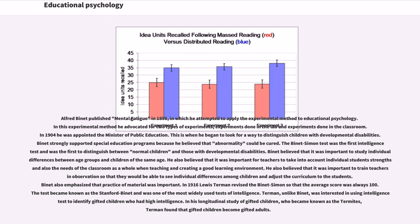Alfred Binet published Mental Fatigue in 1898, in which he attempted to apply the experimental method to educational psychology, advocating for two types of experiments: lab experiments and classroom experiments. In 1904 he was appointed to the Minister of Public Education, where he began looking for a way to distinguish children with developmental disabilities. Binet strongly supported special education programs because he believed that abnormality could be cured. The Binet-Simon test was the first intelligence test to distinguish between normal children and those with developmental disabilities. Binet also believed it was important to train teachers in observation to identify individual differences among children and adjust the curriculum accordingly.